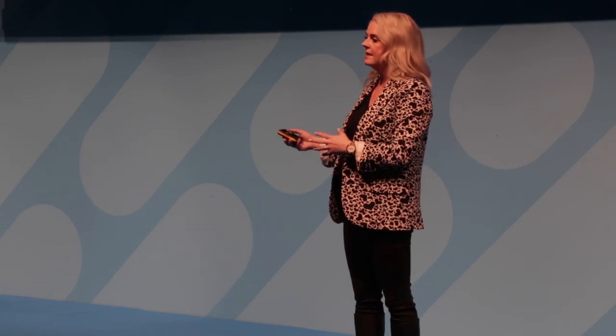Let's take a look at the products we're going to use to make this happen. To connect the store and the data center we'll use Cisco SD-WAN. We're going to use ACI to configure the policy for the applications running in the store, and we'll use DNA Center to help with the standardized configuration of the wireless network.